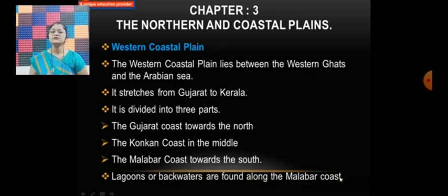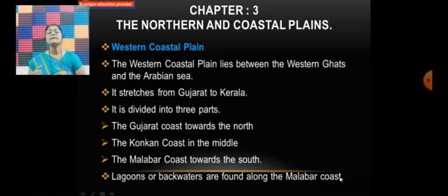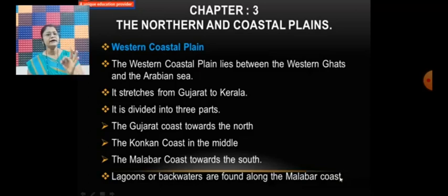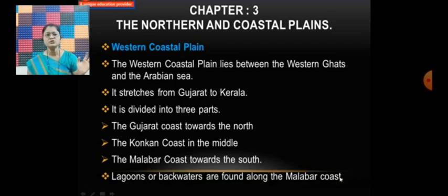The Konkan coast in the middle is the second part, and the Malabar coast towards the south is the third part. So western coastal plain is divided into three parts: Gujarat coast in the north, Konkan coast in the middle, and Malabar coast in the south. Lagoons and backwaters are found along the Malabar coast.